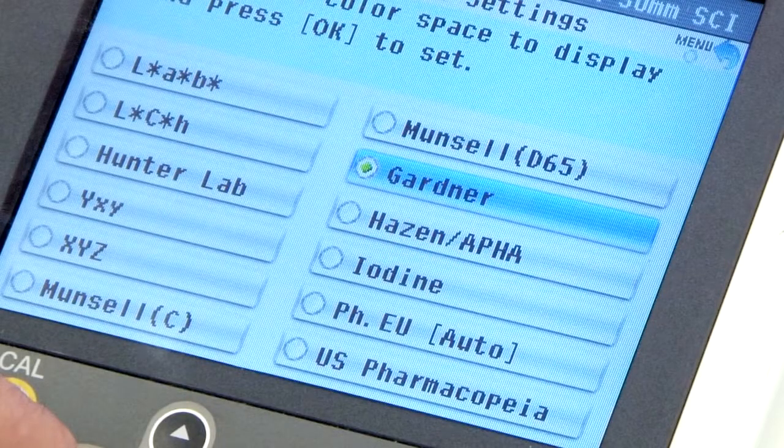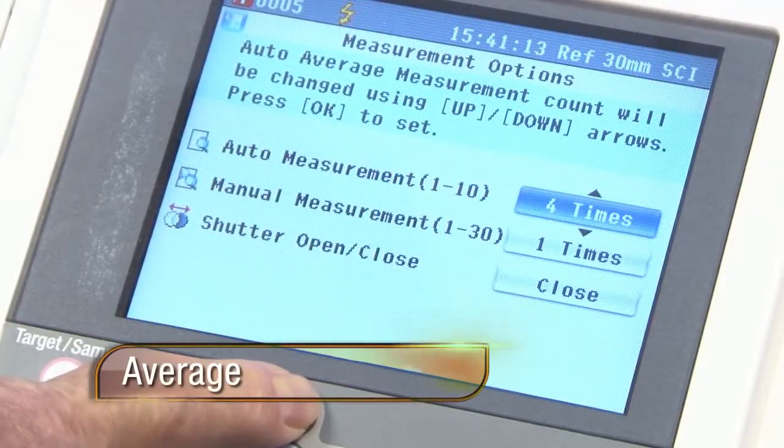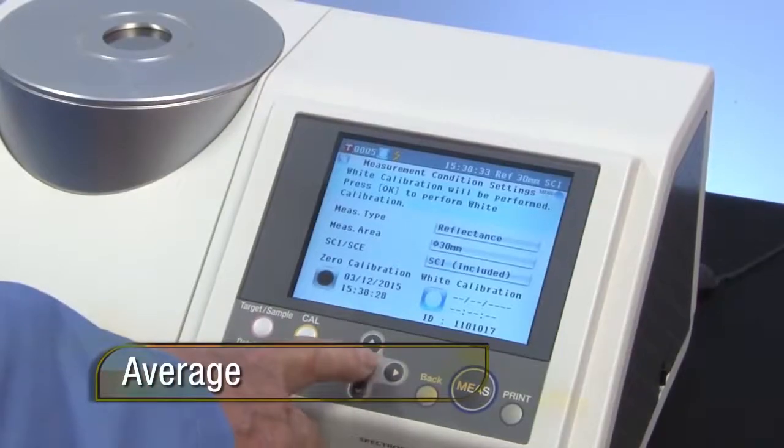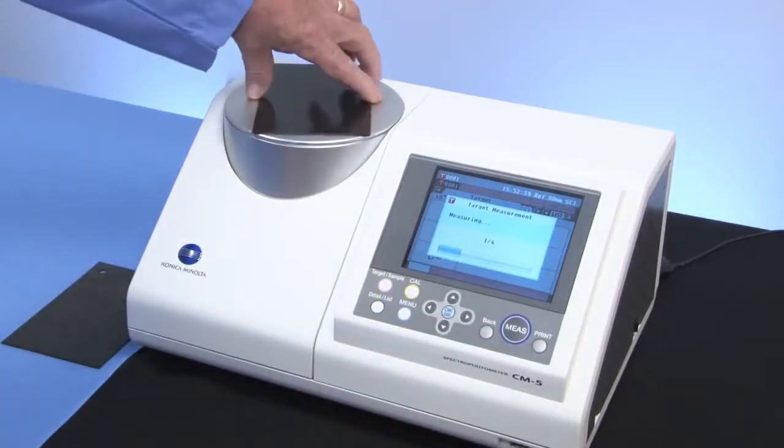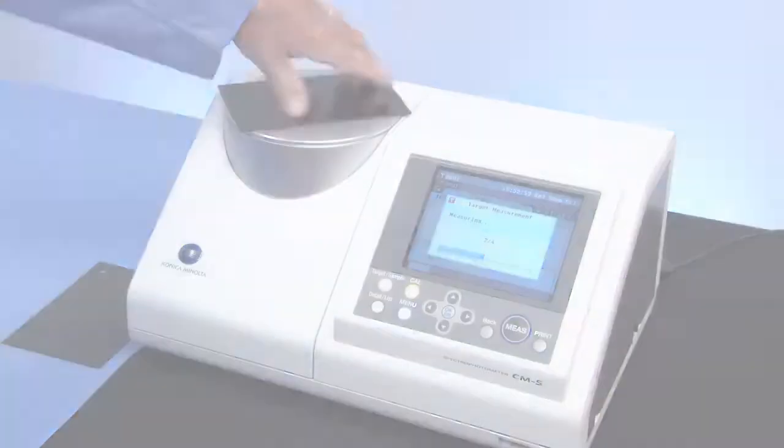The CM5 has an average measurement mode for textured materials. Calibrate, set the auto measurement, and turn the sample while automatic measurements are being taken. This setting is also used with color difference.